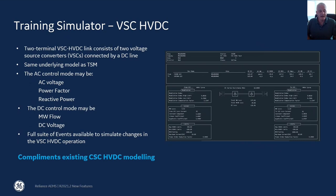Additionally, for the training simulator we've added modeling of VSC HVDC — voltage source converter high voltage DC lines. This is a two-terminal DC line where voltage source converters are modeled at each end. They operate independently as far as the AC control. The AC control modes allowed are voltage control for the AC, controlling power factor by varying the VAR output of the VSC, as well as direct reactive power control. For the DC controls, we support megawatt flow and DC voltage.